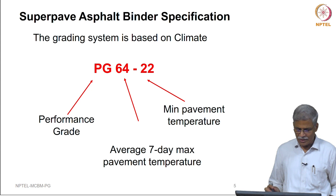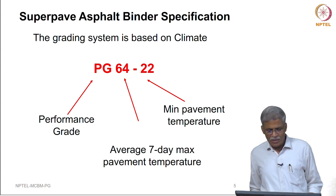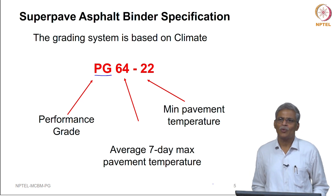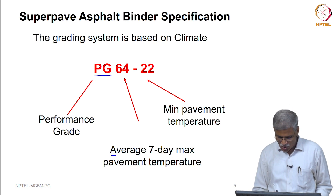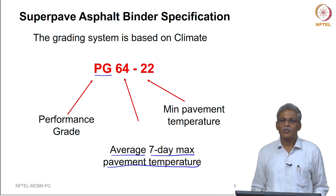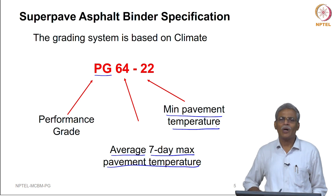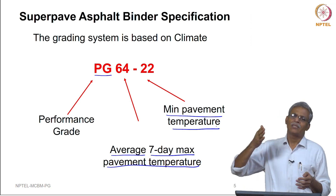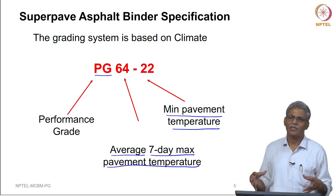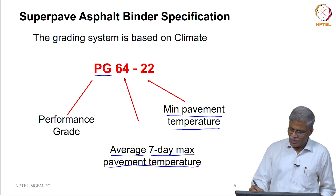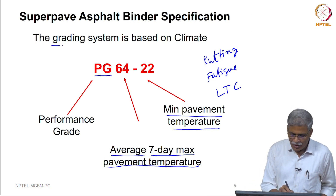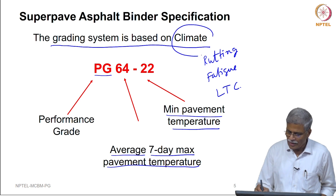PG stands for performance grade, and you will see two numbers, for example 64 minus 22. The 64 stands for the average 7-day maximum pavement temperature, and minus 22 stands for the minimum pavement temperature. Essentially, this means that if you use a binder in a geographical location with pavement temperatures ranging from 64°C to minus 22°C, this binder will be resistant to rutting, fatigue, and low temperature cracking. This grading system is based on climate.